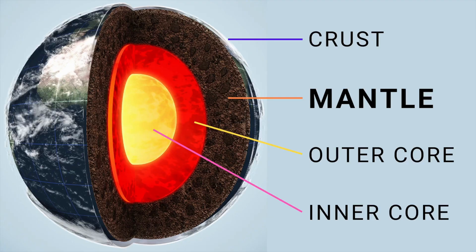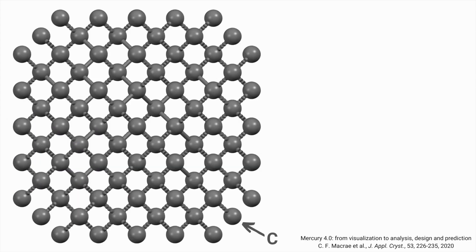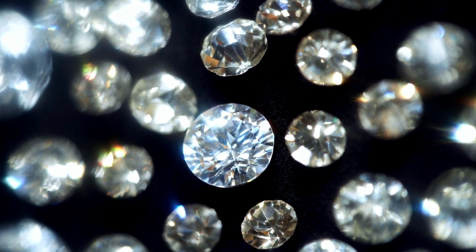Before we go into the colored diamonds, let's talk a bit about the colorless diamonds. Diamonds were created deep beneath the Earth's surface in the upper mantle. The high pressure and temperature conditions in the upper mantle pushed and sealed the carbon atoms together to form the diamond crystal structure. In the diamond crystal structure, the carbon atoms are organized in a tight tetrahedral structural arrangement. If all the positions in the diamond crystal structure were occupied only by carbon atoms and there were no defects or impurities, then we would have the colorless diamonds.